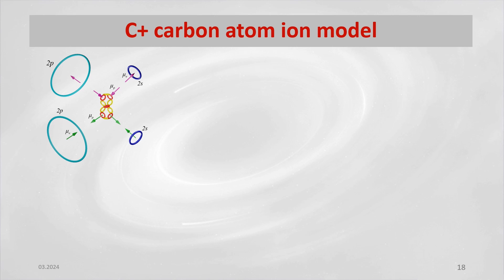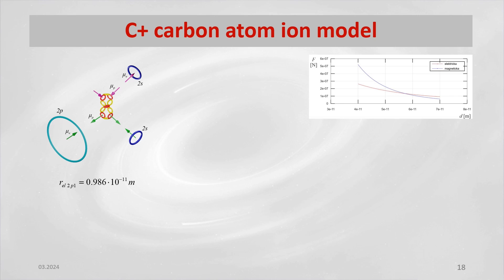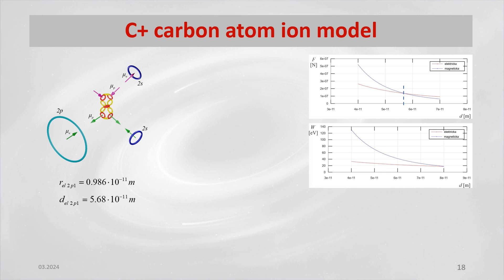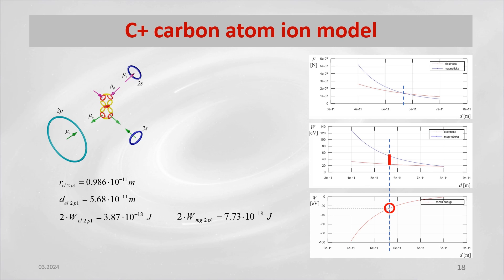After the 2p2 electron is torn off, a carbon atom ion C+ is formed. However, its 2p1 electron is already affected by the released energy of the nucleus after the 2p2 electron, which will be reflected in the change in the radius of the electron and its distance from the nucleus of the atom. After quantifying both its electric and magnetic energies, we can determine the difference, which represents the binding energy of the electron 2p1 of the C+ atom. This quantified value is consistent with the experimentally measured value.